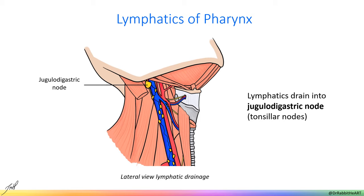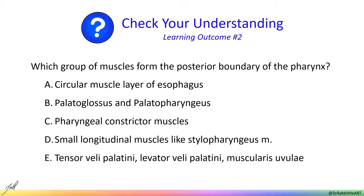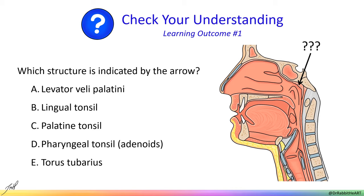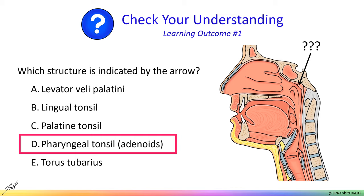Before we move on to the larynx, let's pause to check understanding of the pharynx. Feel free to pause the video to think. Which group of muscles form the posterior boundary of the pharynx? The correct answer is the pharyngeal constrictor muscles — superior, middle, and inferior — which form the posterior wall of the pharynx and contract sequentially to push food into the esophagus. Next question: which structure is indicated by the arrow? This arrow is pointing at the pharyngeal tonsil or adenoids, located in the nasopharynx just above the torus tubarius. This is clinically relevant because excessive swelling of the pharyngeal tonsil can block the opening from the auditory tube.